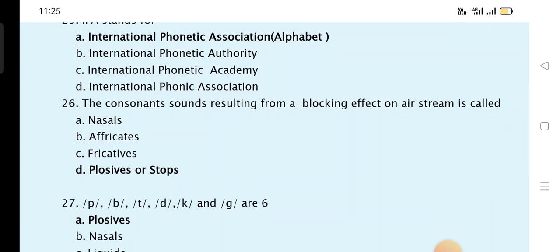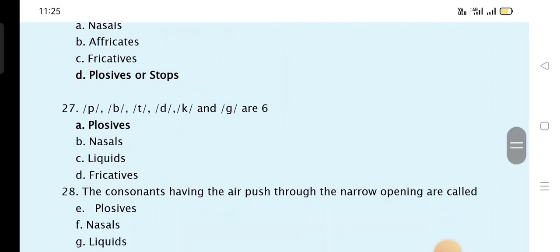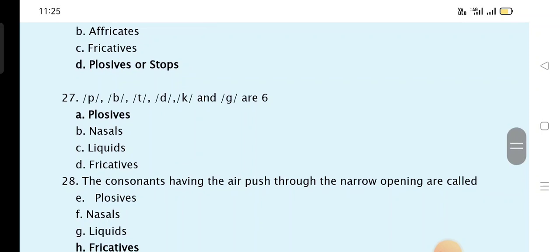IPA stands for International Phonetics Association Alphabet. The consonant sounds resulting in the blocking effect on air streams is called plosive or stops. P, B, T, D, K, G are plosives.